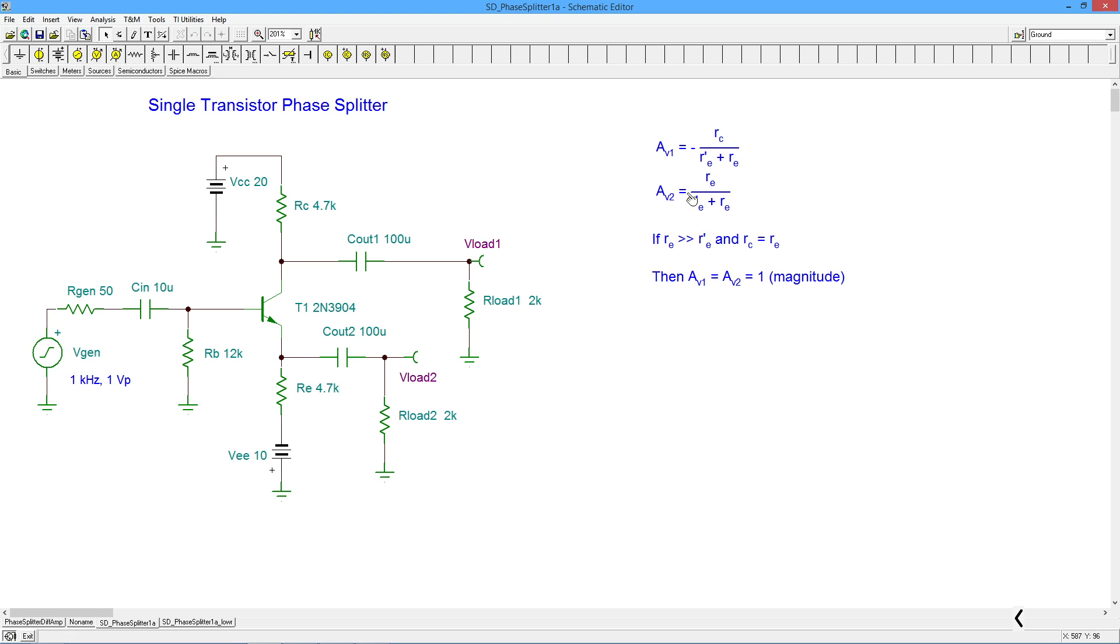In other words, your DC biasing resistor 4.7k in parallel with this 2k, divided by the R prime E plus the RE. In other words, whatever resistance you have down here. For the follower, the common collector, the equation is nearly identical except for two things. There's no minus sign, and we have RE in the numerator instead of RC.